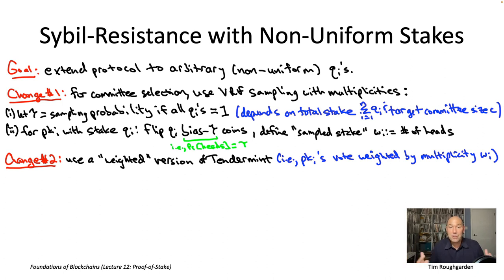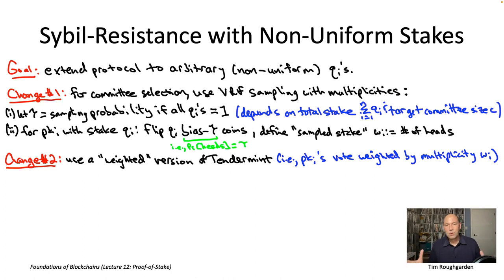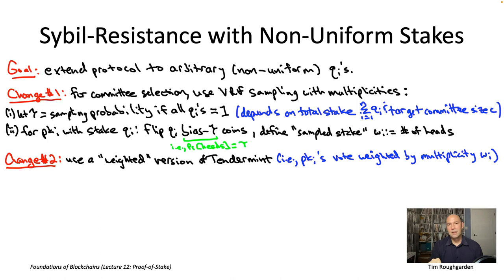Previously, credentials were used to verify committee membership. If there are 10,000 public keys in the staking contract, votes include a signature identifying which key it corresponds to and a credential. By the efficient verifiability property of VRFs, you can check the credential was computed correctly, then check whether it is below the threshold tau sub c. If it's below tau sub c, that public key is one of the roughly 100 committee members allowed to vote. If someone tries to submit a credential larger than tau sub c, you know they're among the 9,900 public keys that didn't make the committee, and you ignore their vote.